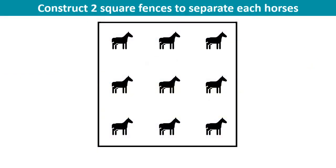Below are 9 horses located in a squared fenced meadow. Can you construct 2 more square fences so that each horse will be in a fenced area by itself? You have 10 seconds. Here is the answer.